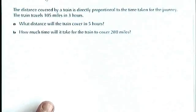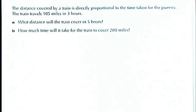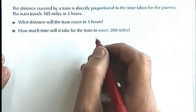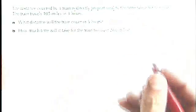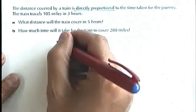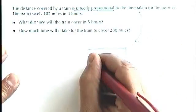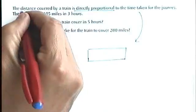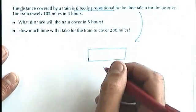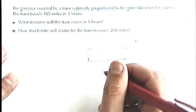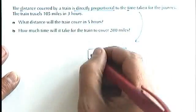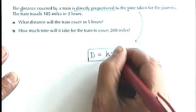Let's just have a look at a worded question as the last thing we're going to do today. The distance covered by a train is directly proportional to the time taken for the journey. The train travels 105 miles in three hours. What distance would a train cover in five hours? So again, let's use these words here. We've got directly proportional, so we know that two things are going to be directly proportional. What are those two things? Well, the distance covered, so I'm going to use a d, and the time taken, and a t. So I'm going to write that d equals kt, like that.